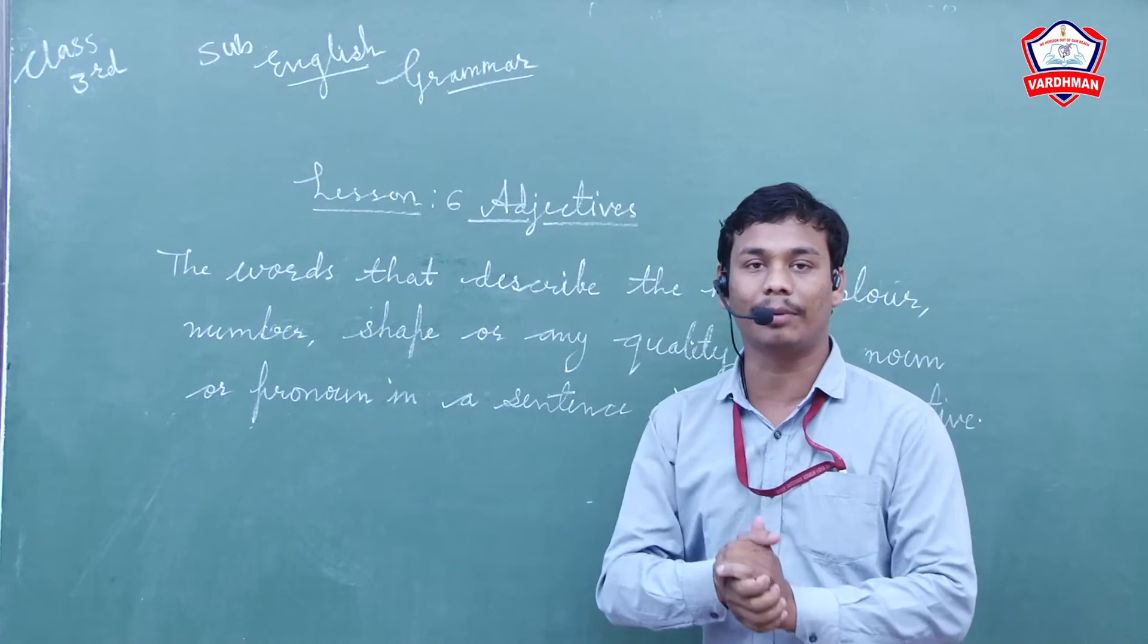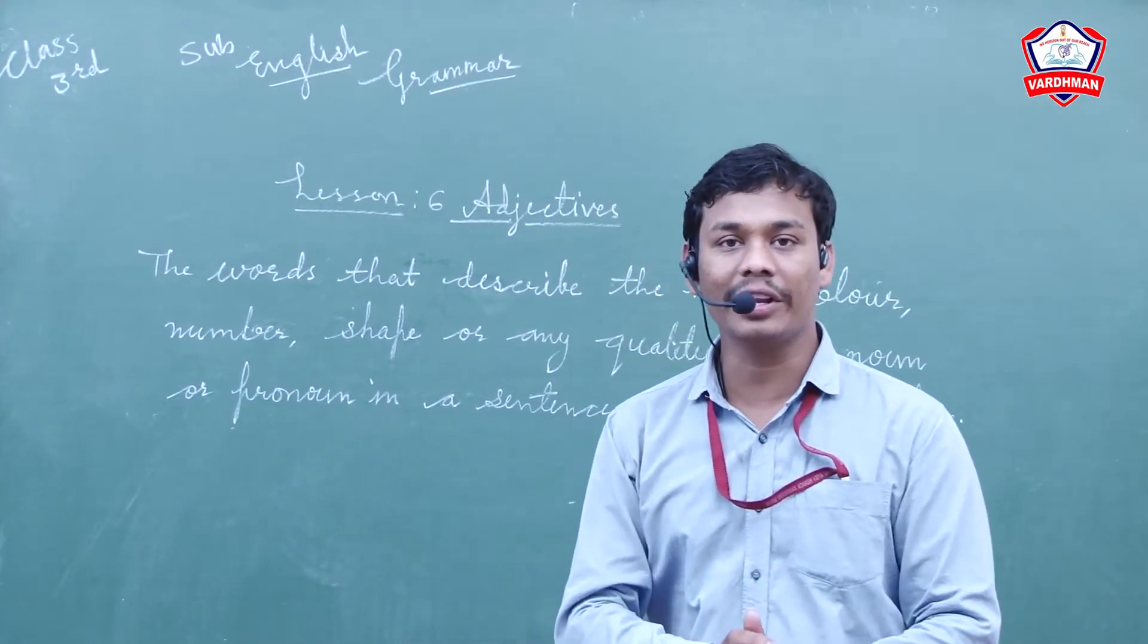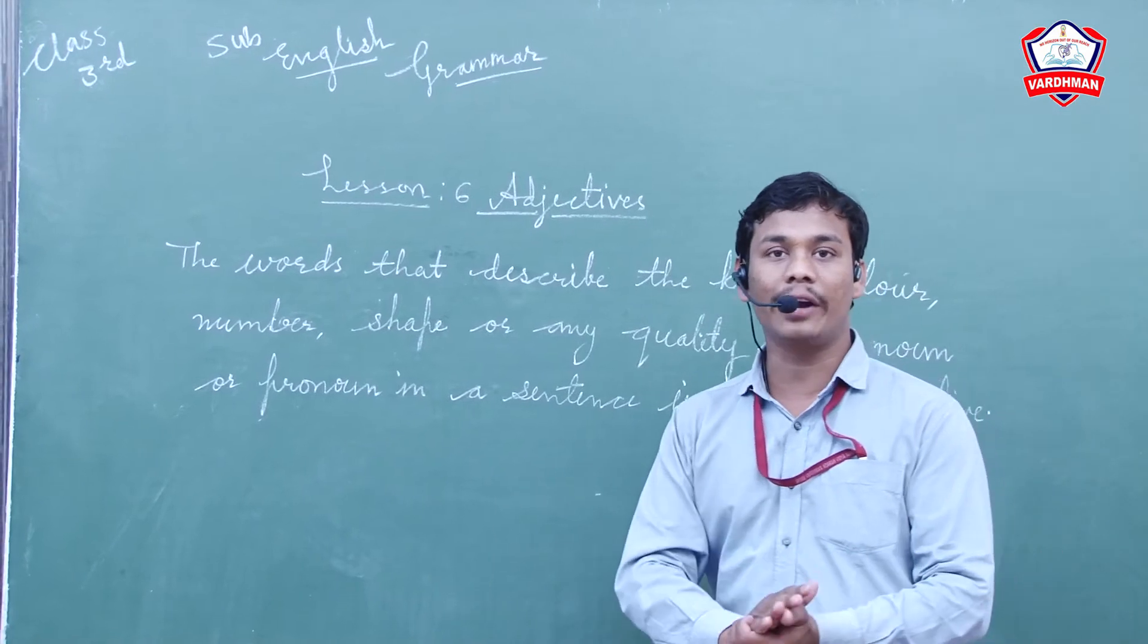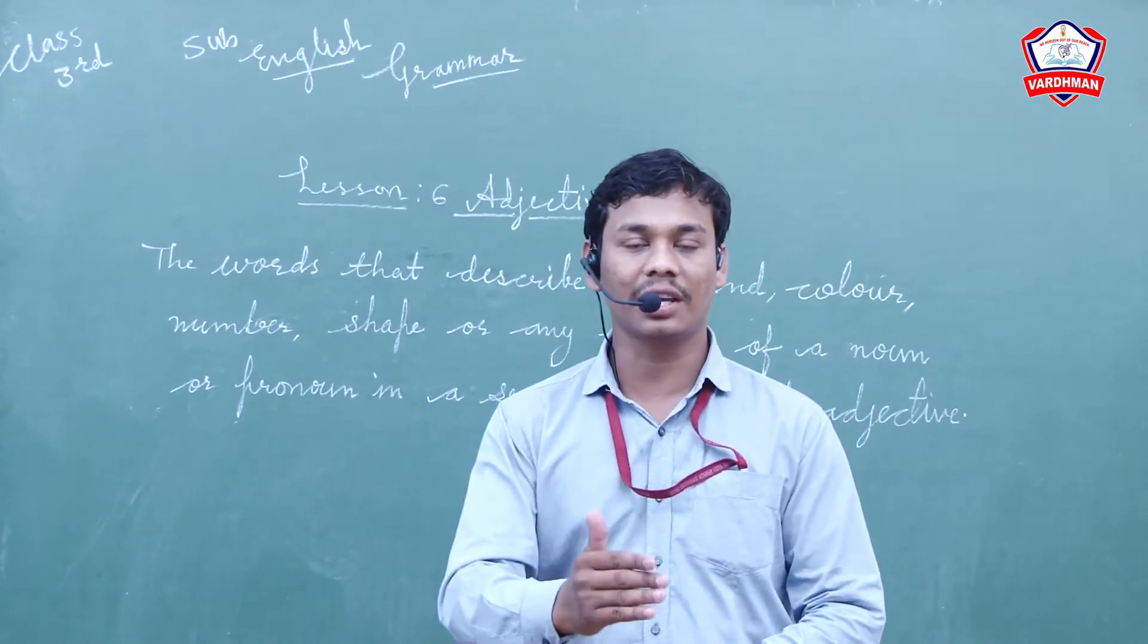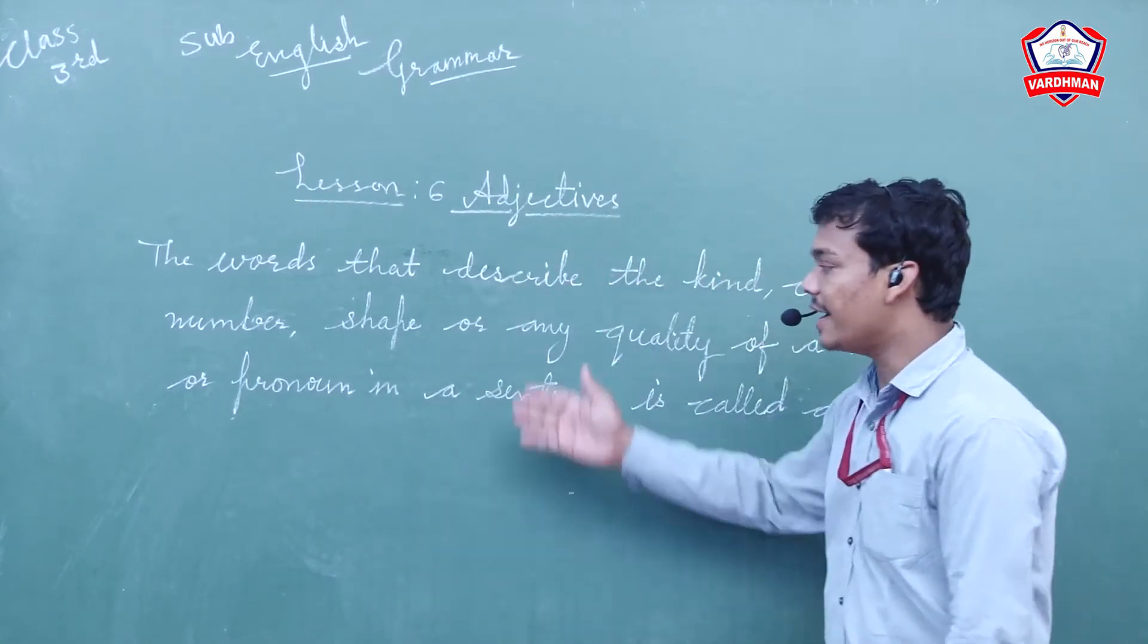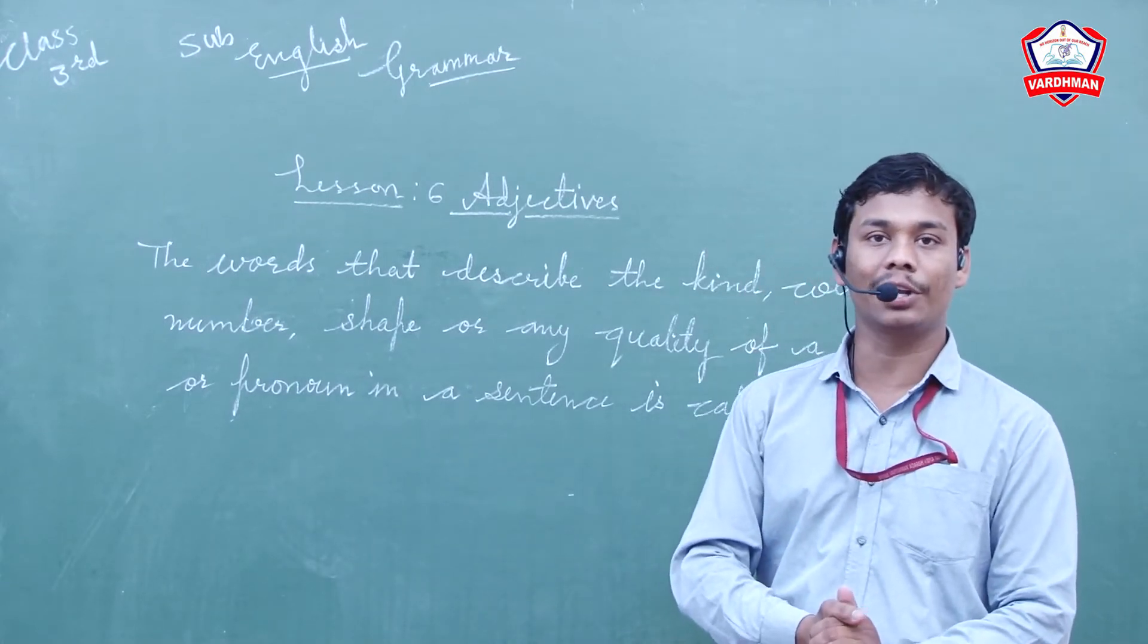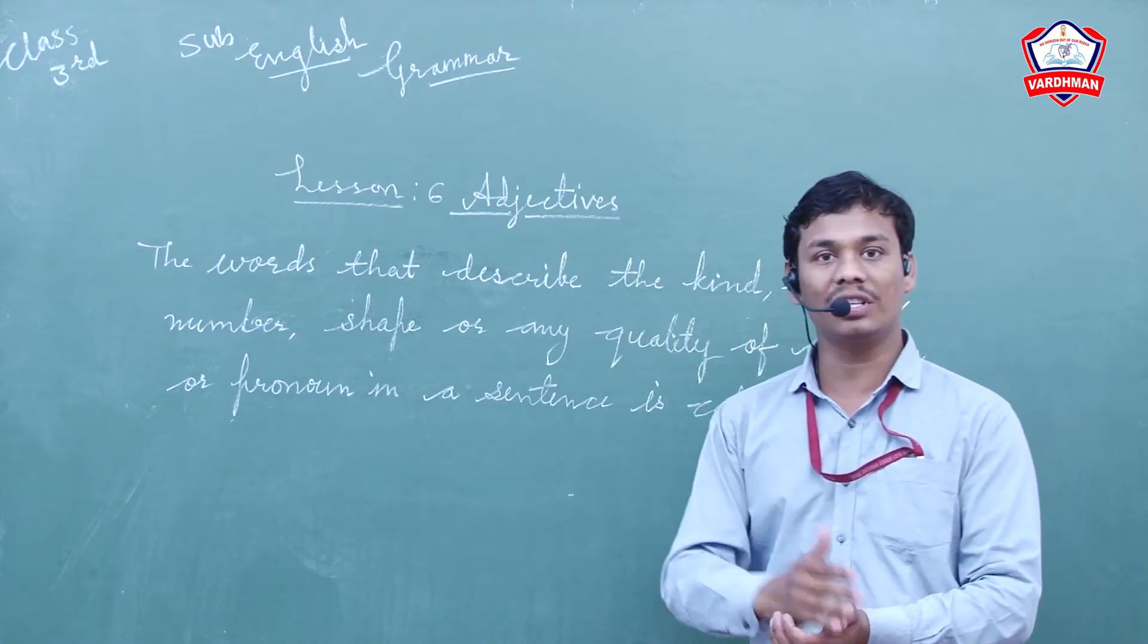We will study about adjectives in this entire chapter. Since you are in the lower classes, kinds of adjectives are not given in your class like kinds of proper noun, common noun, abstract noun are given. Similarly, adjectives may have kinds, but they are not given in your class. I will explain all the kinds, but when you come to the next class, you will study each and every kind of adjective.